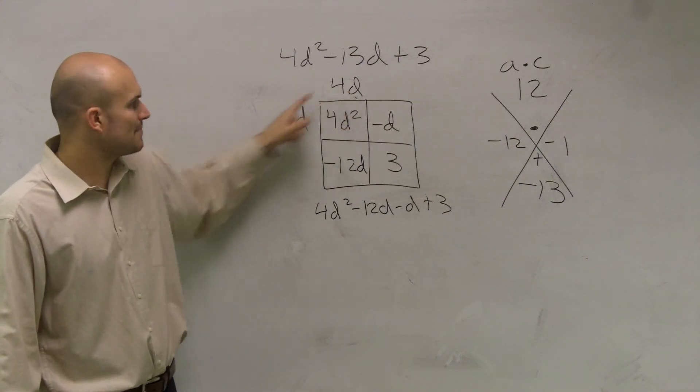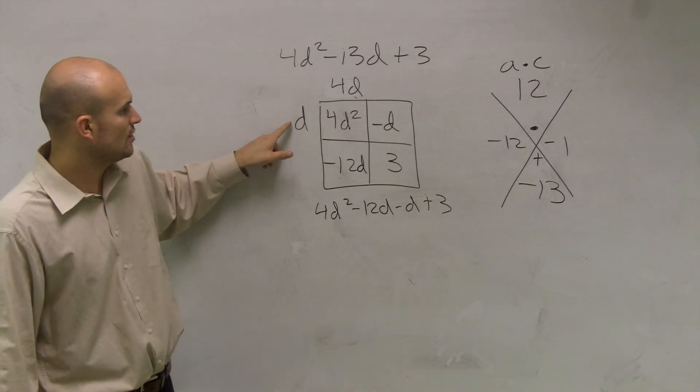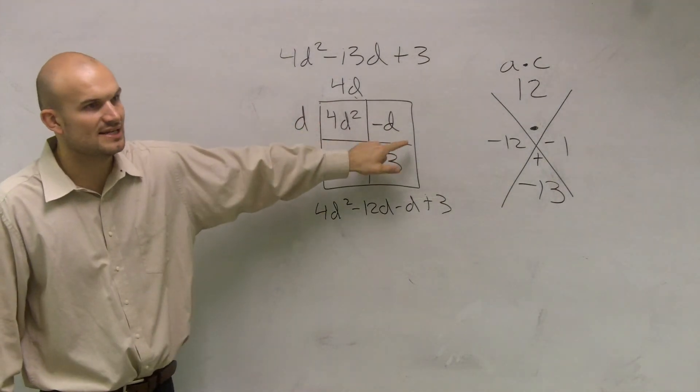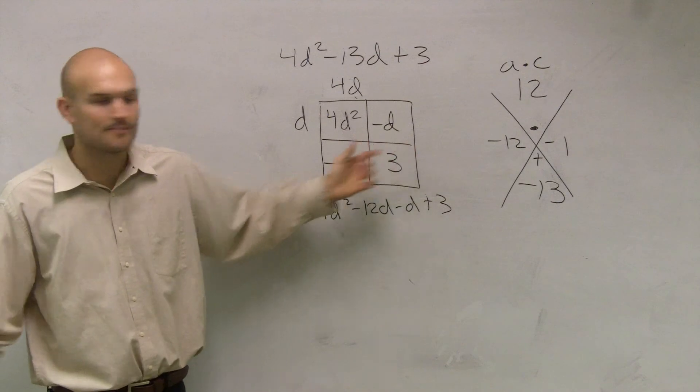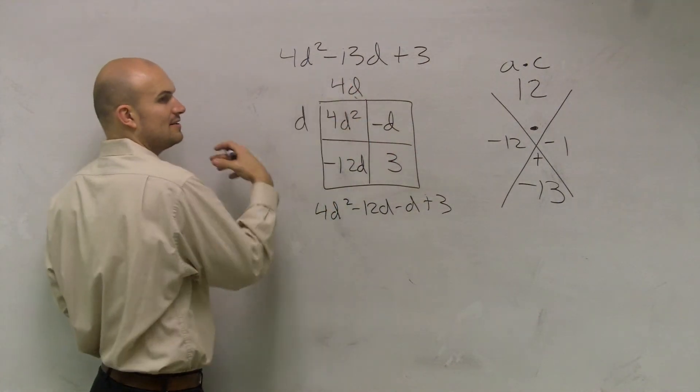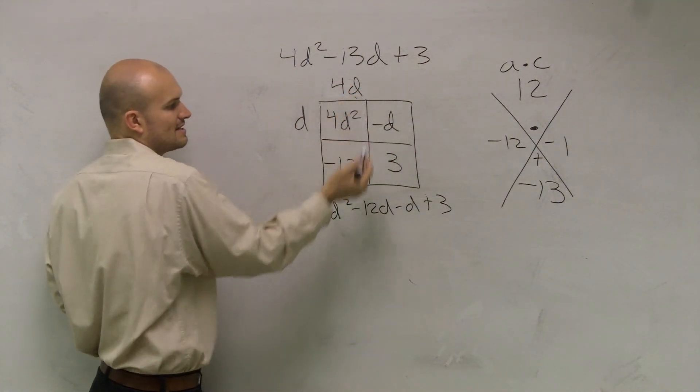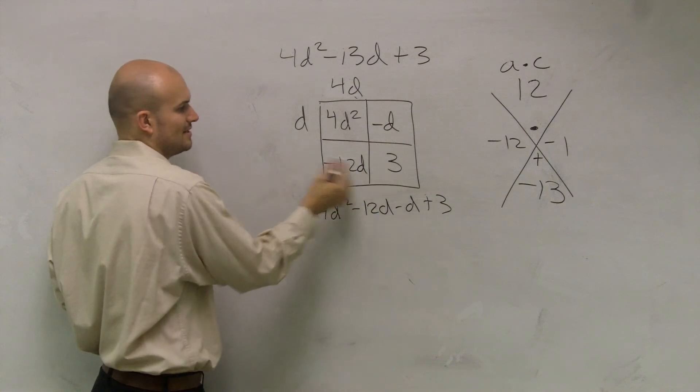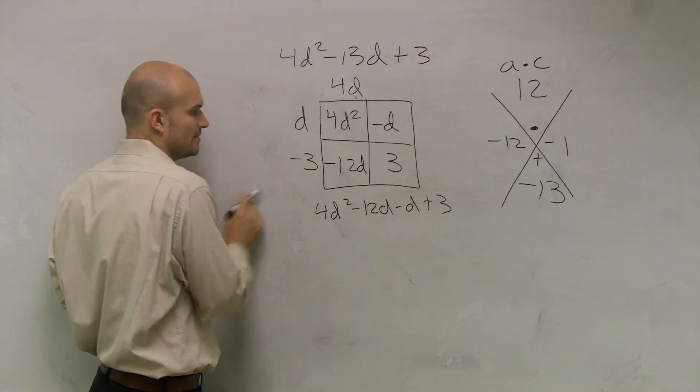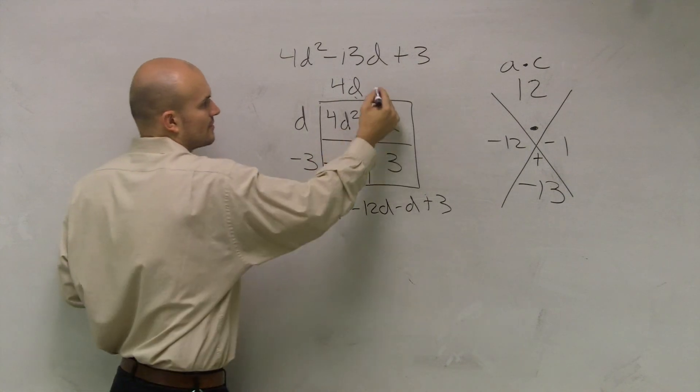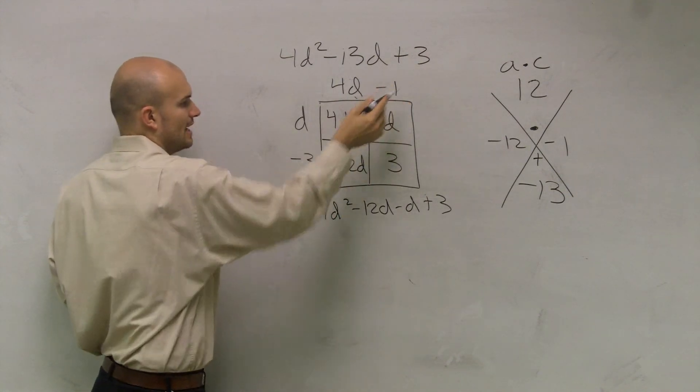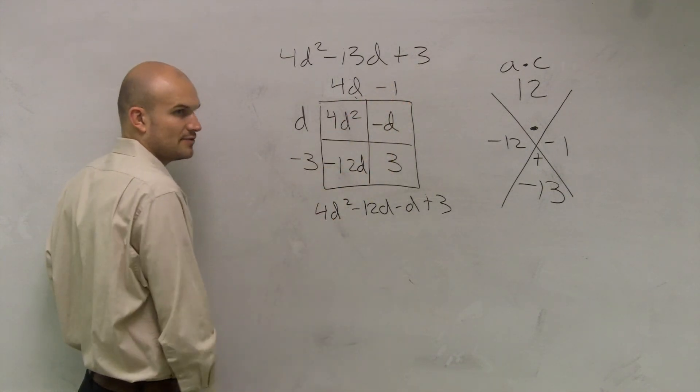And the reason why you want to put it up top is because if you put a 4d here, 4d times what gives you a negative d? Again, you're running into that same problem. But if I can write it here, now let's just say it out loud. We have 4d times what gives you a negative 12d? Negative 3. d times what gives you a negative d? Negative 1.